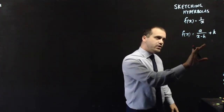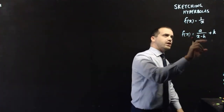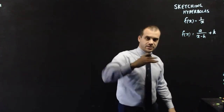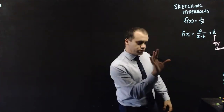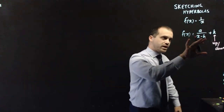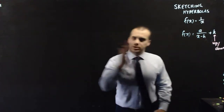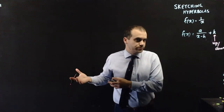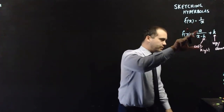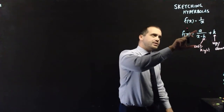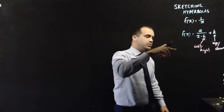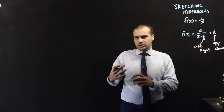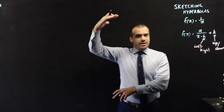From our previous work, you should know that if you take a function and add something to it, you're going to shift the function up and down — a vertical translation. You should also know that adding or subtracting an h value shifts it left or right, sort of the opposite to what you might expect. And if you multiply a function by something — which is what the a value does — you're dilating the function around the x-axis.